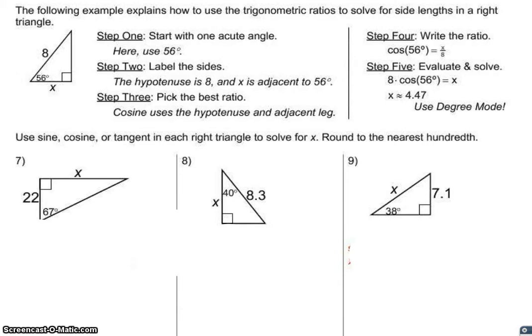In part two we're going to be looking at how to solve for a missing side length in a right triangle. The first thing we're going to look at is our angle measure. In this case we have an angle of 56 degrees. What we're now going to do is the same thing we did on the front.